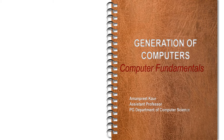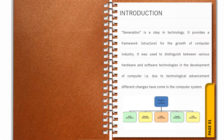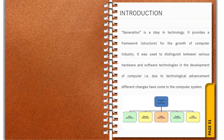We will discuss what is generation. Computers have been classified into five generations in a chronological order based on their development. Generation in computer talk is a step in technology. It provides a framework that is structured for the growth of the computer industry. It was used to distinguish between various hardware and software technologies in the development of computers. Due to technological advancement, different changes have come in the computer system. Till today, there are five computer generations.